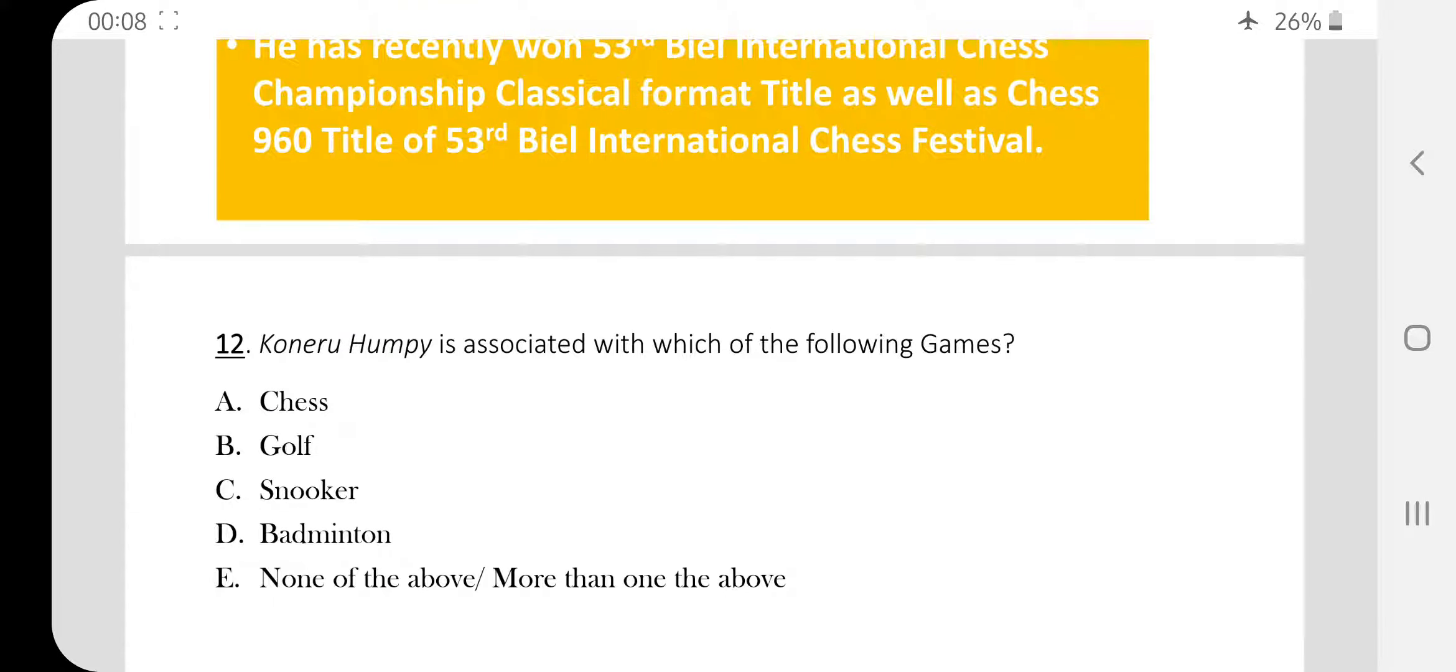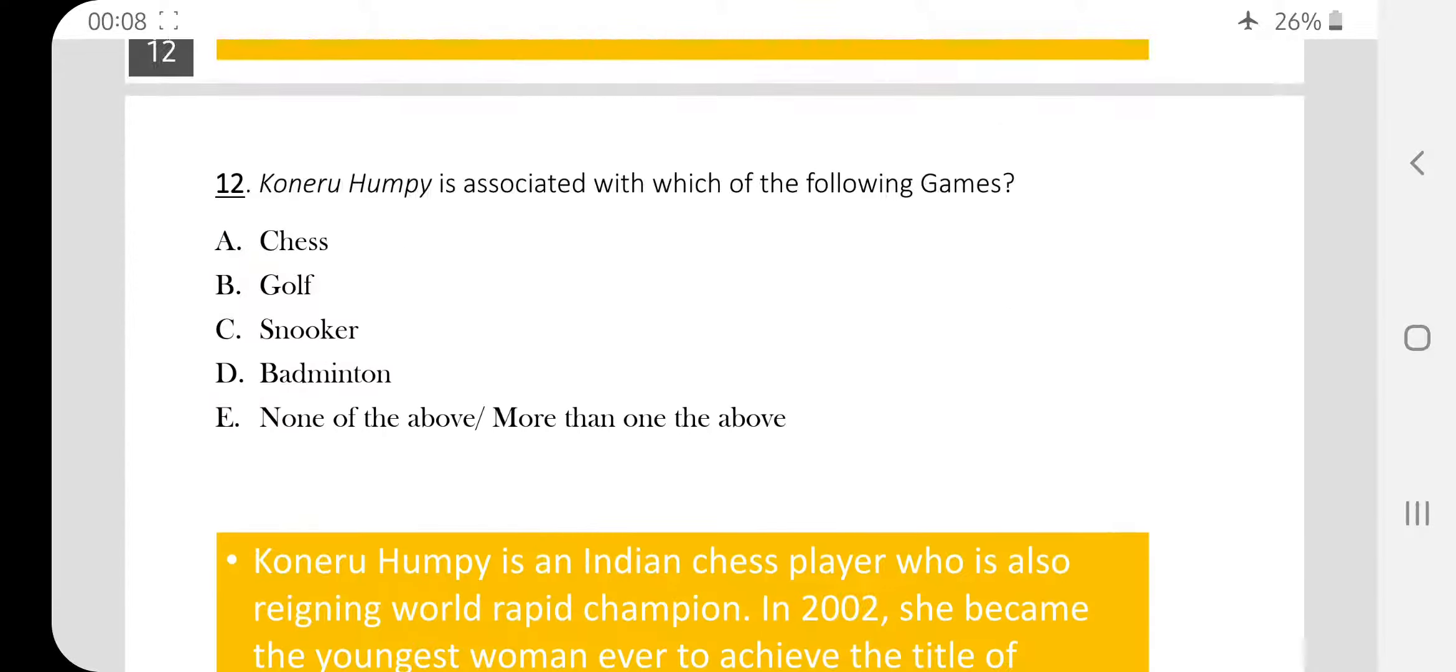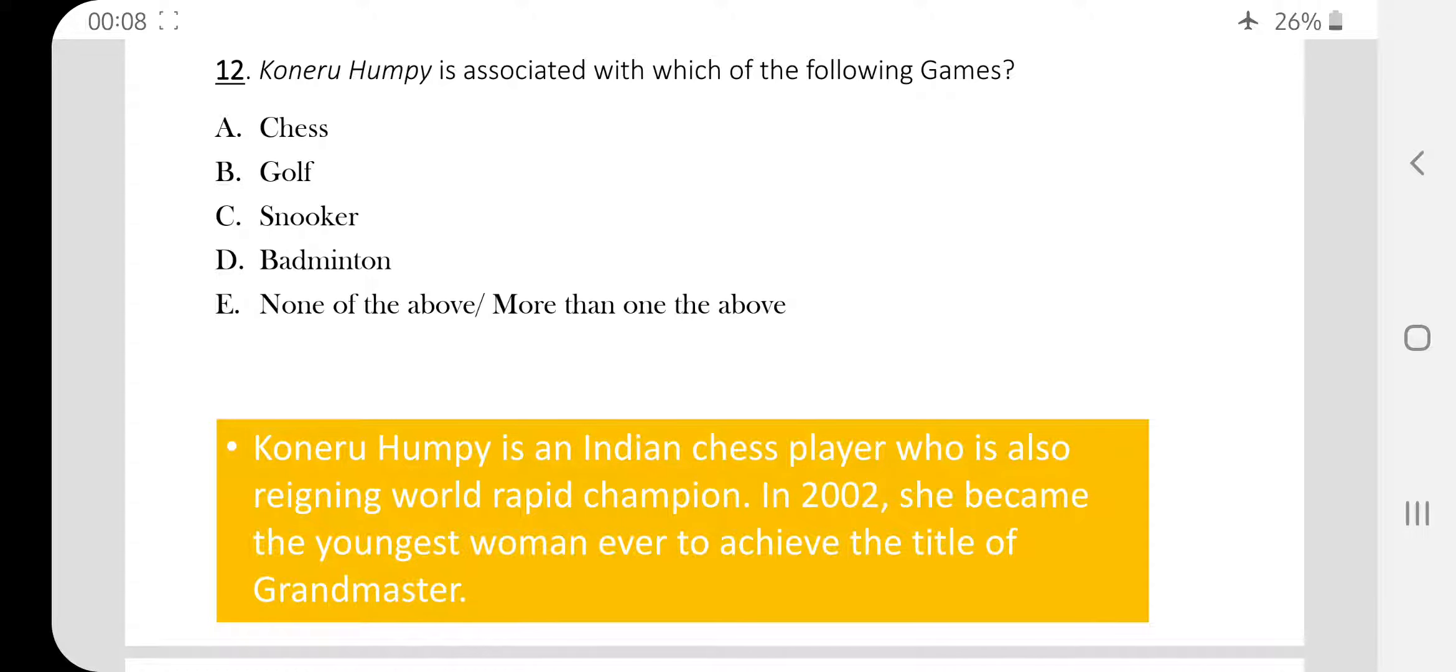Koneru Humpy is associated with which of the following games? Koneru Humpy is associated with chess. She is the youngest grandmaster. In 2002, she became the youngest woman ever to achieve the title of grandmaster. Moreover, Koneru Humpy is the current chess champion. She is the reigning world rapid champion in chess.